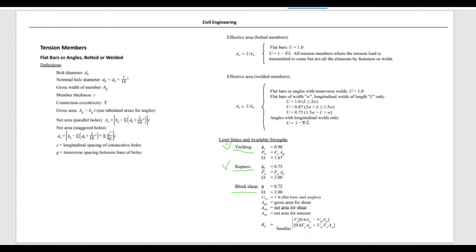The formula for rupture is PN equals FU times AE, where PN is the nominal tensile strength, FU is the ultimate tensile strength, and AE is the effective area. And this is the formula for the effective area for bolted members. And here you have for welded members.